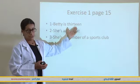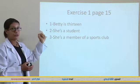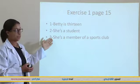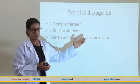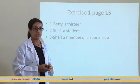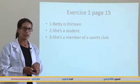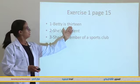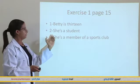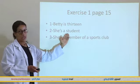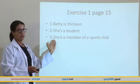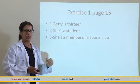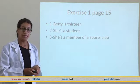Okay, let's correct. Number one: Betty is 13. Number two: she is a student. Number three: she is a member of a sports club. Nice, good.